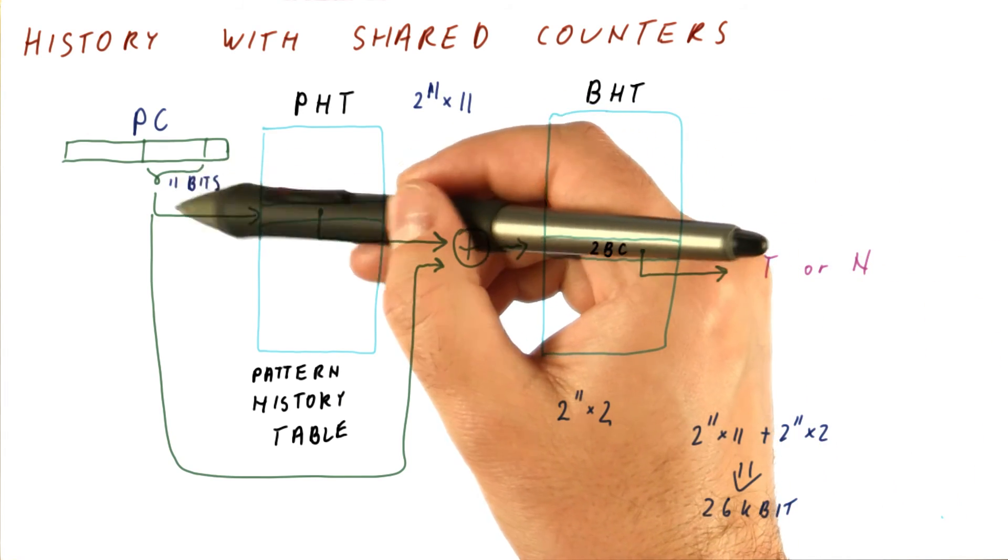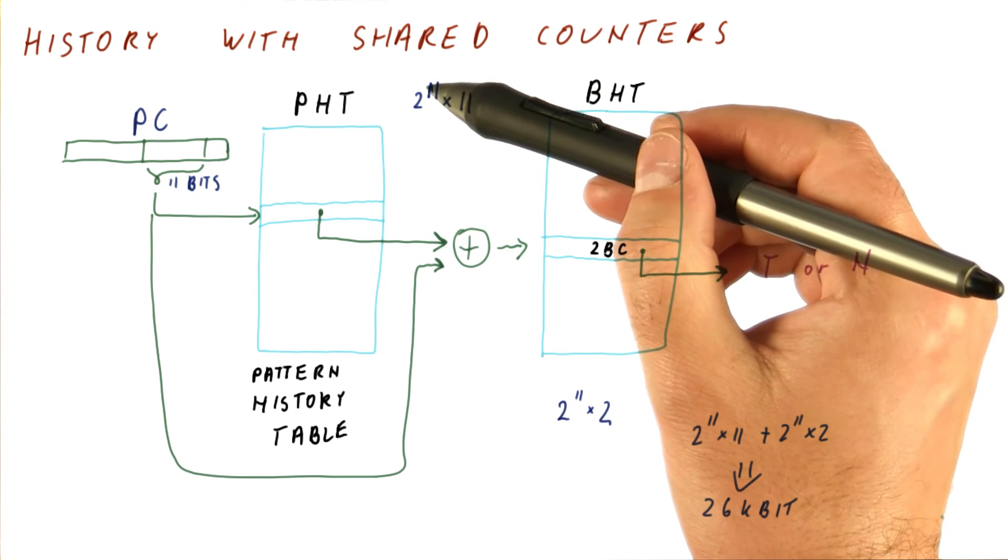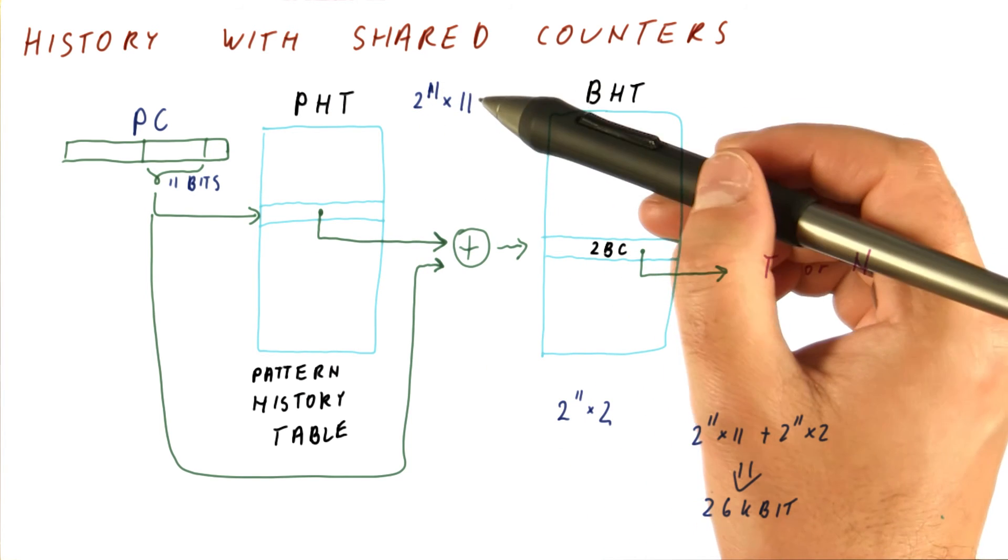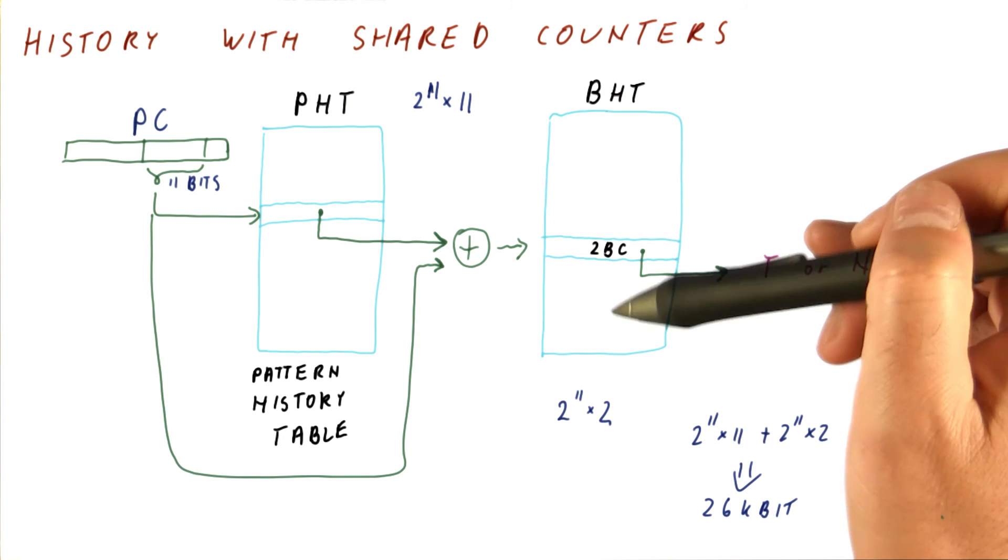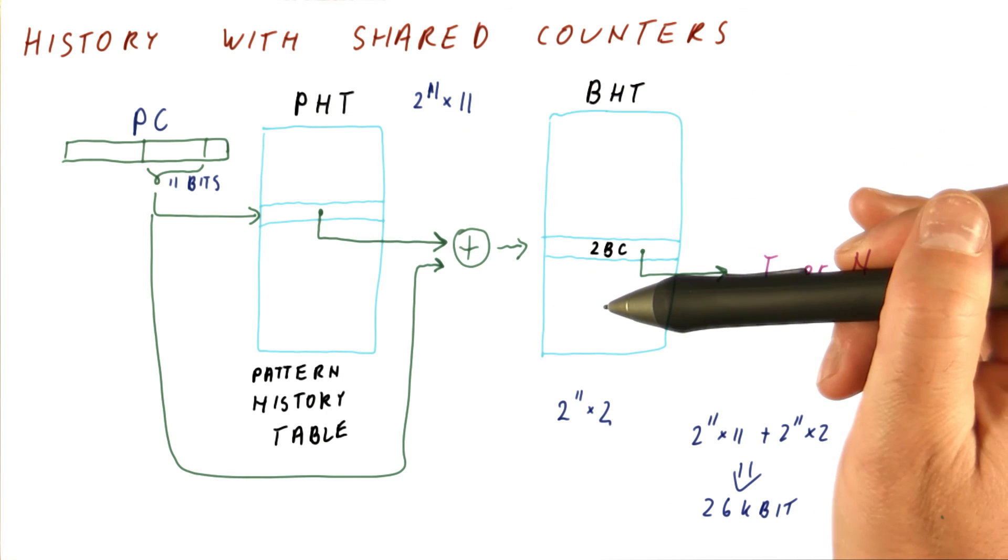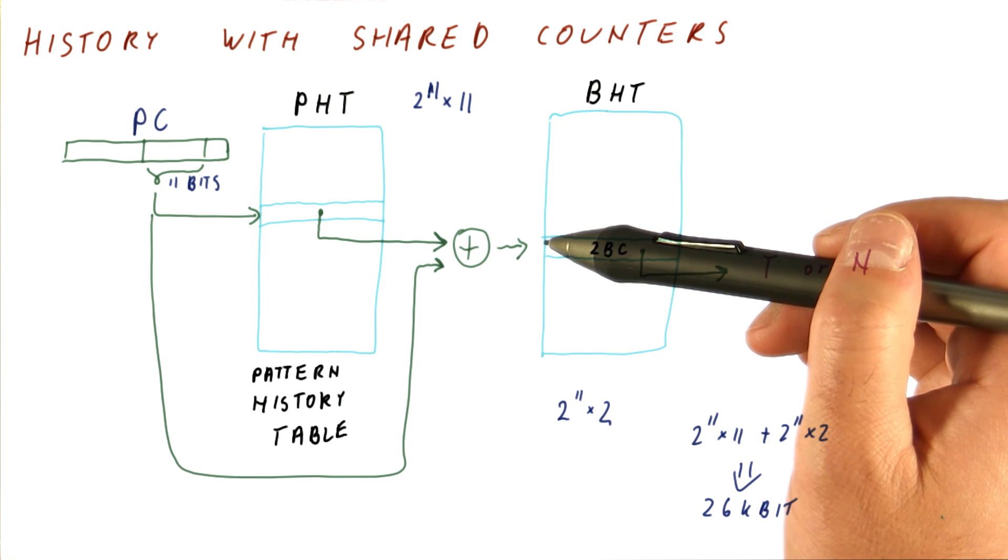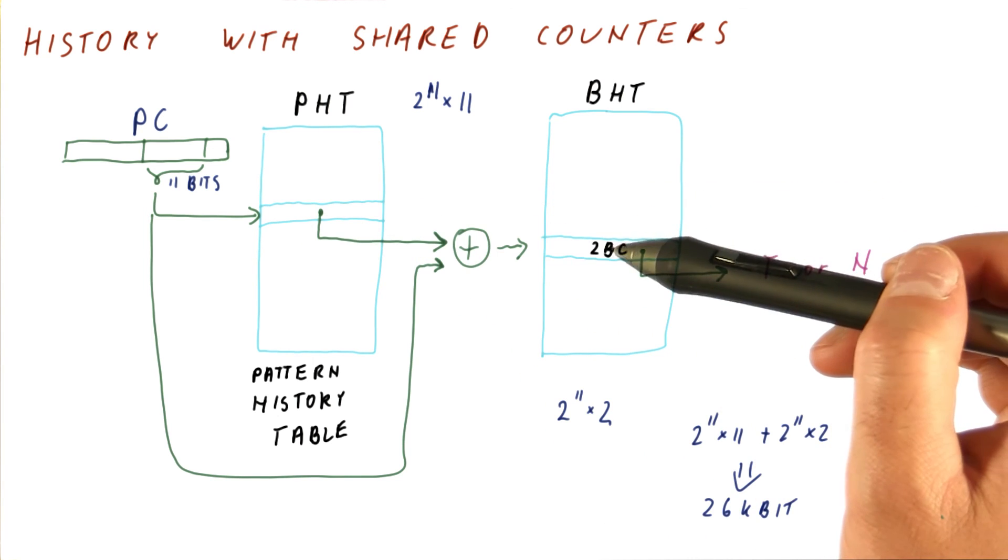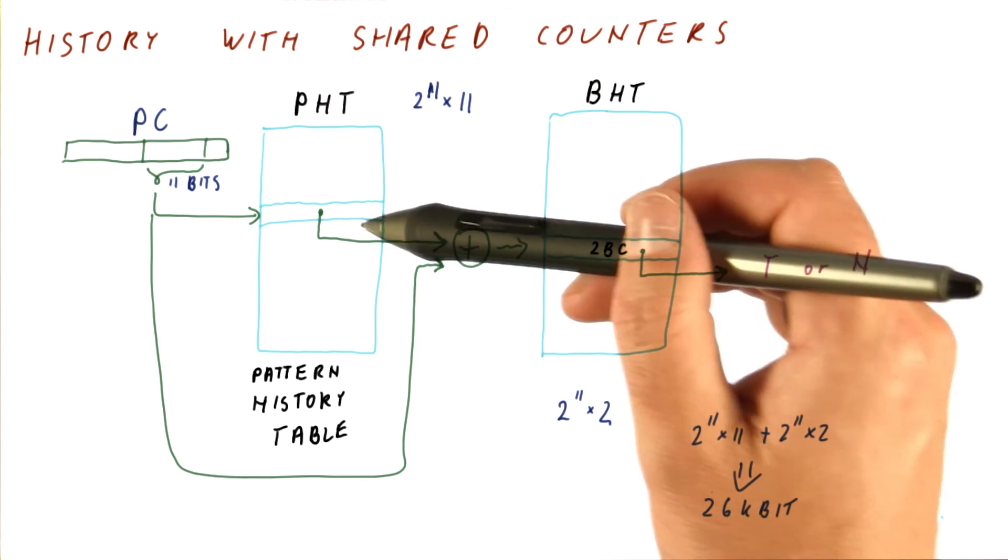Note also that we don't have to have these numbers here and here equal. We can, for example, take something like 10 bits of the PC to index into the PHT, which gives us only 2 to the 10th histories. And have a 16-bit history so that we can have 2 to the 16th entries here and so on. It still will keep the overall cost in the tens of kilobits, not megabits or gigabits that we would get if we try to put together long histories with dedicating 2-bit counters for each possible history in each entry.